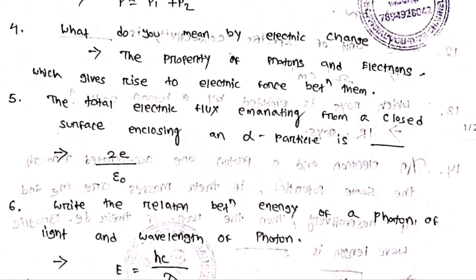What do you mean by electric charge? Electric charge is the property of protons and electrons which gives rise to the electric force between them. This property of protons and electrons that produces electric force is known as electric charge.